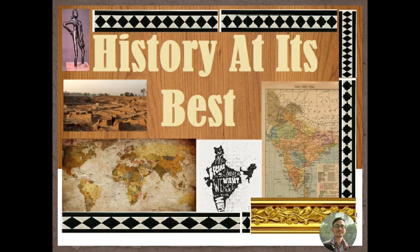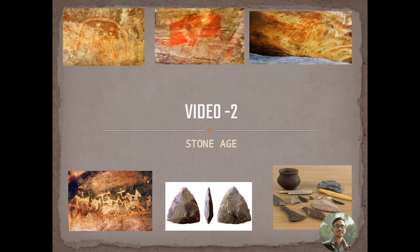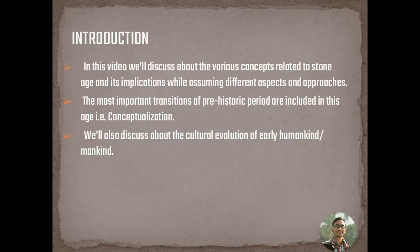Welcome viewers to History at Its Best. This is a series of videos and our second video is about the Stone Age. In this video we'll start with an introduction, then talk about geological epochs, the Paleolithic age and its divisions, the Mesolithic age, and then the Neolithic age. We'll discuss various concepts related to the Stone Age, including important transitions of the prehistoric period such as conceptualization, bipedalism, rapid expansion in brain size and cranial capacity, and the cultural evolution of early humankind.